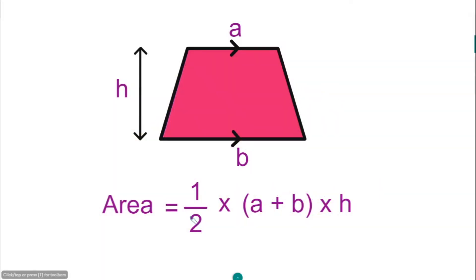A trapezium is a quadrilateral that has only one pair of parallel sides, and that's side A and side B. We show they are parallel by putting the arrowhead on the sides.